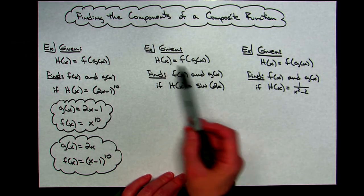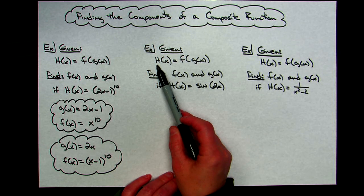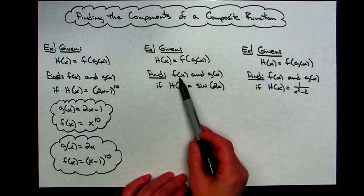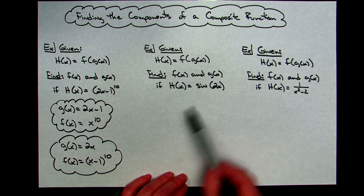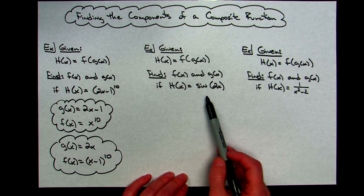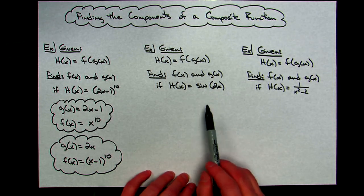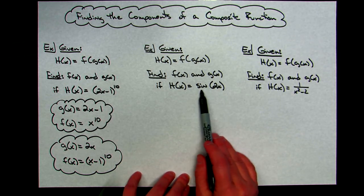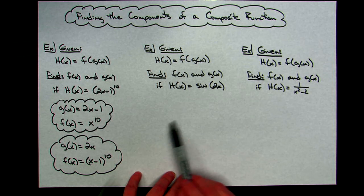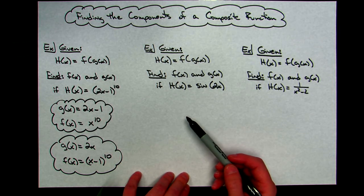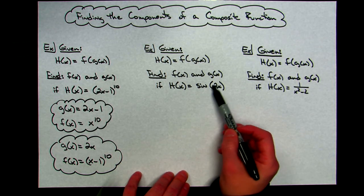For my second function everything's going to remain the same. I'm assuming that my h of x function is my composite function. I want you to find the inside and the outside function. Trig functions are pretty common, especially in calculus when working on derivatives. So if I've got the sine of 2x, well where is the inside function? That's probably the number one question you want to ask.